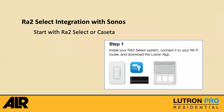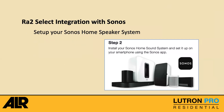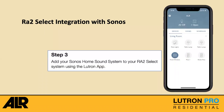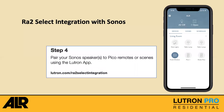The four easy steps: Number one, install your Ra2 Select system, connect it to your Wi-Fi, and download the Lutron app. Number two, install your Sonos home sound system and set it up with your smartphone. Number three, add your Sonos home system to your Ra2 Select system using the Lutron app. Number four, pair your speakers with the Pico remote for scenes using the Lutron app. The website lutron.com/radio-ra2-integration shows what's possible with Ra2 Select.